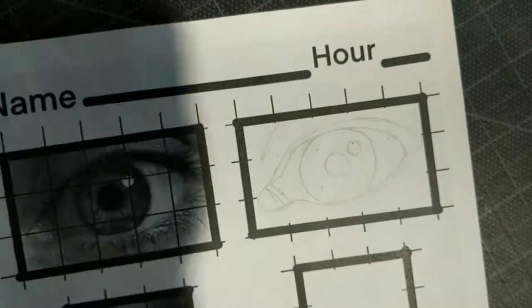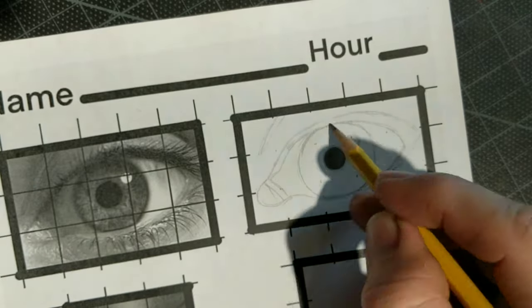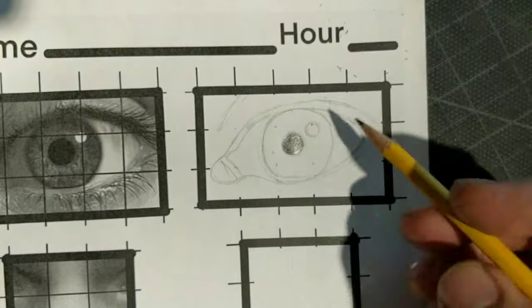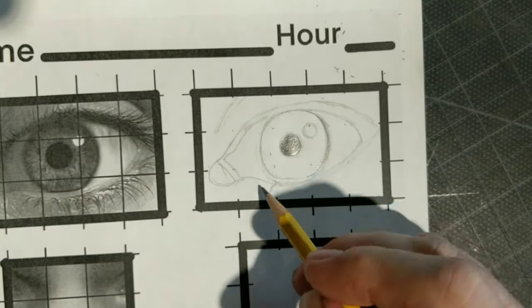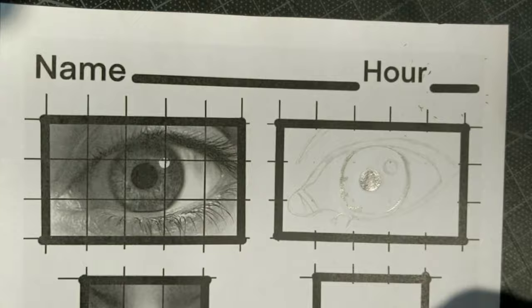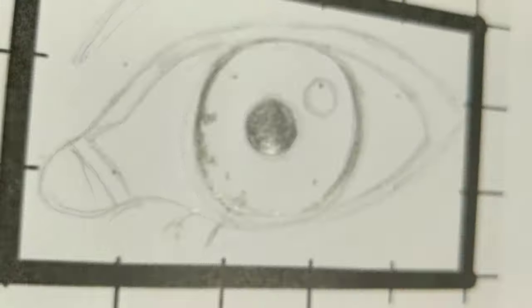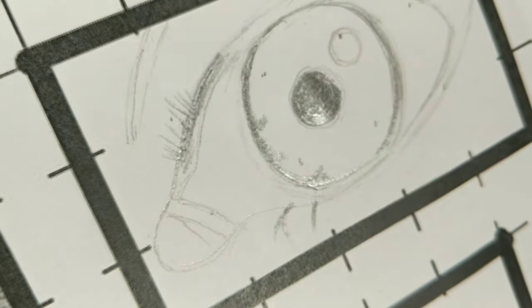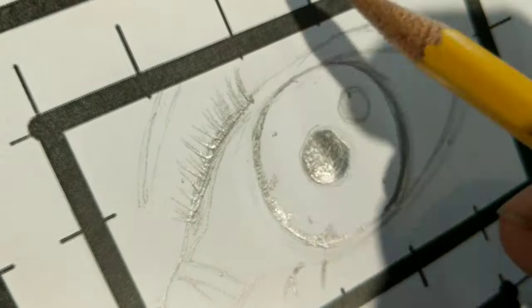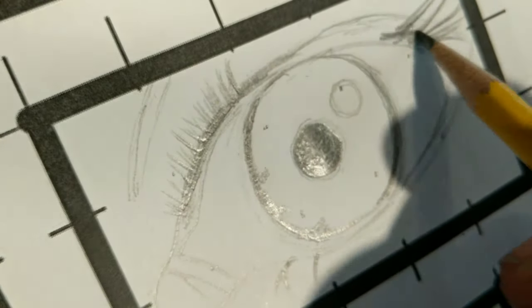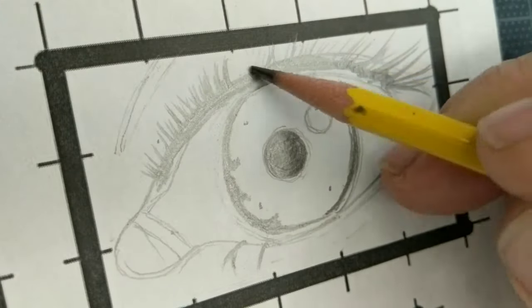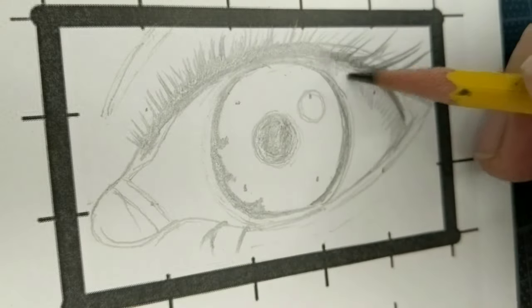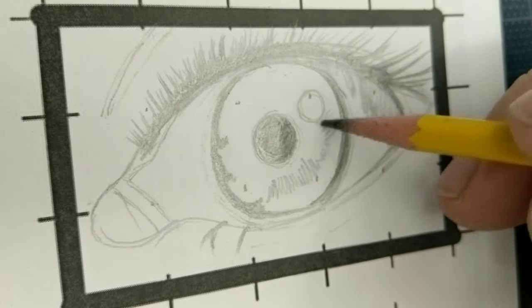What I really want to do is match the values of each area that's in the eye on the left. I want to match that value in the eye on the right that I'm drawing. I don't want to get too crazy with outlines. I want to look really close at the different shading.